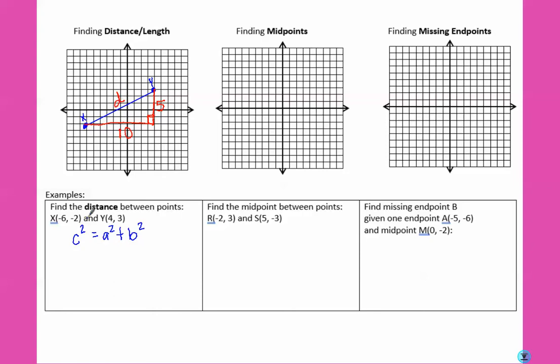So c squared would be our distance. A and b are our 10 and our 5. So 10 squared plus 5 squared. 10 squared is 100. 5 squared is 25. So d squared equals 125. To get rid of the squared, we need to square root. So d would equal the square root of 125, which is approximately 11.18.